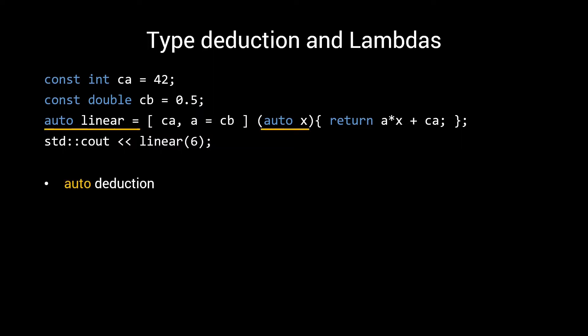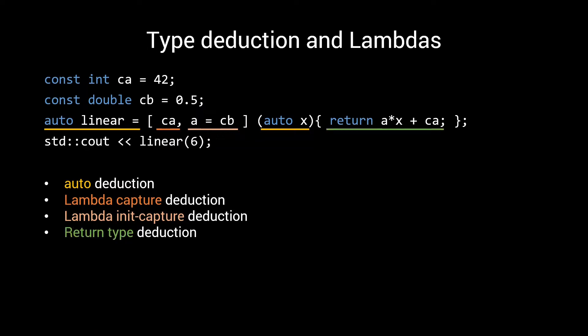First, we have auto type deduction, which, as explained before, follows the template type deduction rules, assuming we don't have any braced initializers to deal with. Next, we have lambda capture deduction, as well as lambda init capture deduction, which we haven't discussed before. Finally, there is return type deduction, to determine the return type of your lambda.